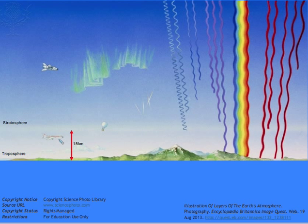The troposphere is that thick layer of the atmosphere closest to the surface of the earth. On average, it spans about 15 kilometers, being thicker at the equator and thinner at the poles. It is within the troposphere that all meteorological or weather phenomena occur — it's where you find rain clouds, and also where you find urban air pollution and photochemical smog.